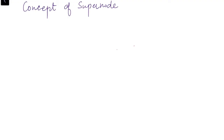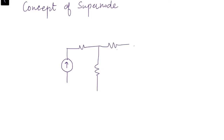The concept of super node is applicable when we have a voltage source present between any two nodes. To understand this, let's consider a network consisting of different sources and resistances.